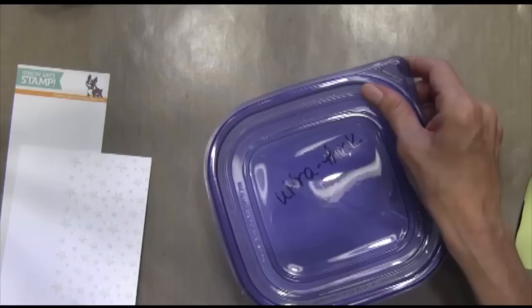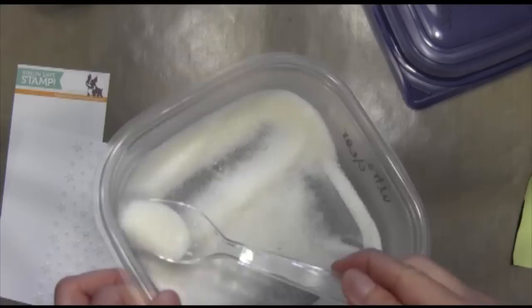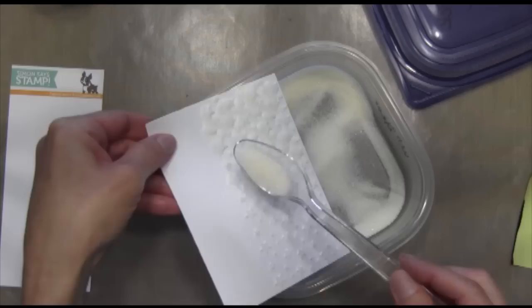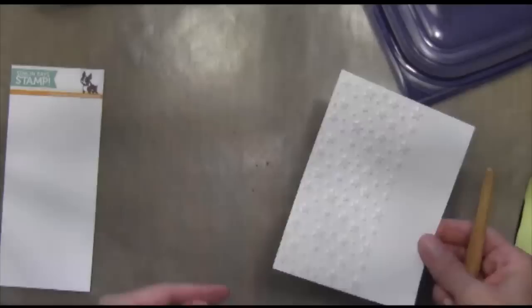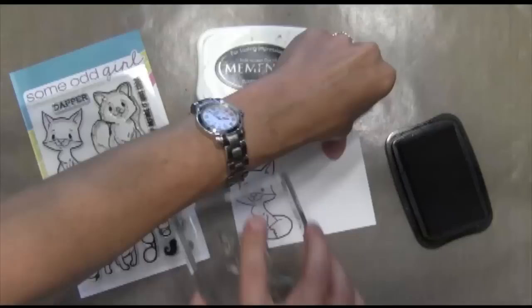Now I've got my ultra thick embossing enamel. It's kind of like granular, like sugar. I'm going to put it on my embossing paste while it's still wet, and then I'm going to let it dry for about an hour or something like that. And I use a stipple brush to get any pieces that went astray.